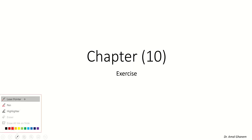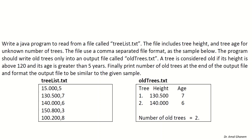In exercise 2, we will go through the following example. Write a Java program to do the following: read from a file named treeless.txt. The file will include tree height and tree age for an unknown number of trees, using comma-separated format. The program should write all old trees into an output file called oldtrees.txt. A tree is considered old if its height is over 120 and its age is greater than 5 years. Finally, print the number of all trees at the end of the output file, formatted similar to the given sample.